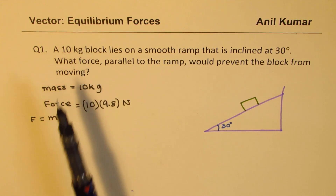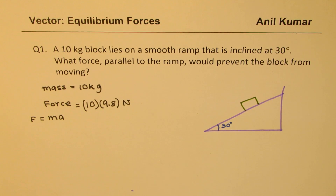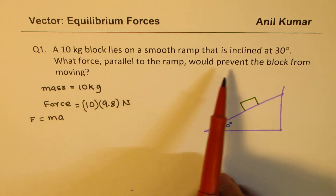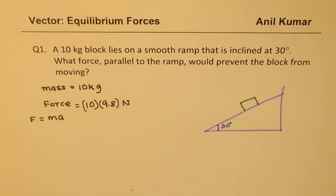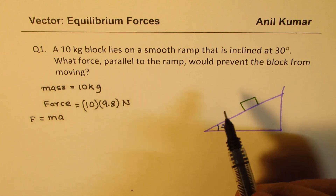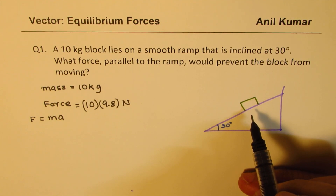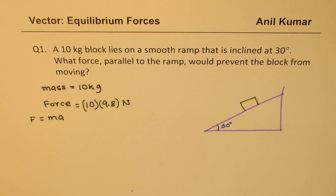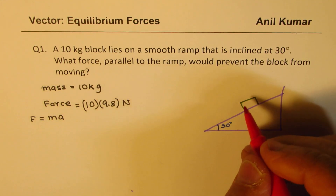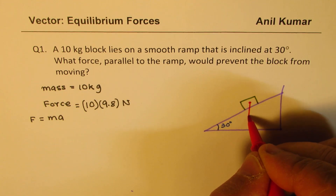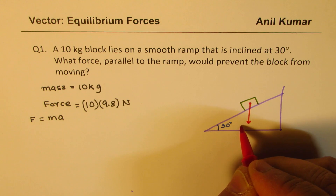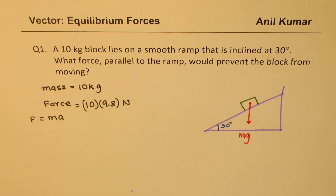Sometimes in equations they will write 'kg weight,' which means the same as force. The question asks what force parallel to the ramp would prevent the block from moving. A force that prevents motion is called an equilibrant force. This block will move because of its weight, which acts downward — let's call this mg.